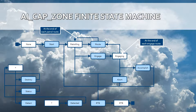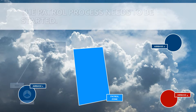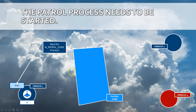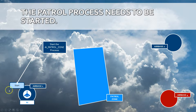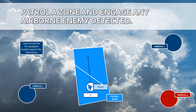Let us go quickly through the diagrams explaining this process in a little bit more visual detail. The AI-CAP-ZONE is a process that lets an AI be patrolled in a patrol zone. The AI-CAP-ZONE is the process, not the AI — you need to attach an AI to that process. Once you have attached it through a method called setControllable, you can start the process by triggering the event start. The AI will then be routed to random points within the patrol zone while detecting for targets.